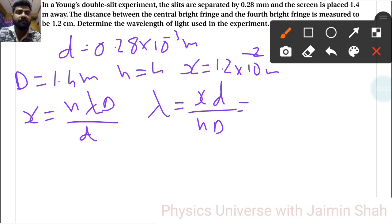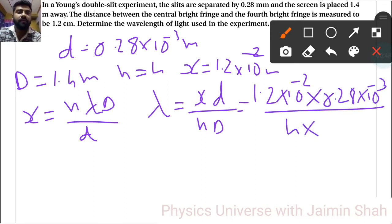Substituting the values: x = 1.2 × 10⁻² meters, d = 0.28 × 10⁻³ meters, n = 4, and D = 1.4 meters. So λ = (1.2 × 0.28)/(4 × 1.4) × 10⁻⁵ = 0.06 × 10⁻⁵ meters. That is our wavelength.